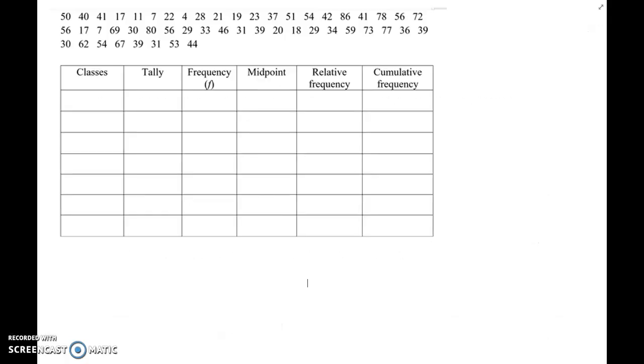In order to create a frequency distribution table with 7 classes, we need to find several data values first. The first one, you need to find the minimum value. When you look at this table set, the minimum value looks like 4.